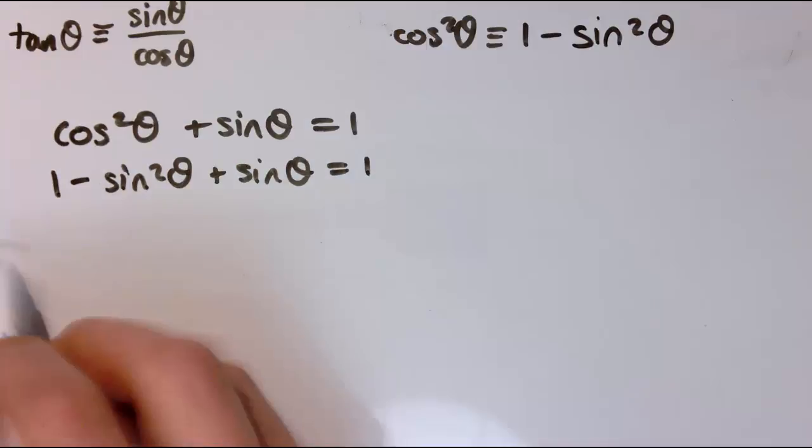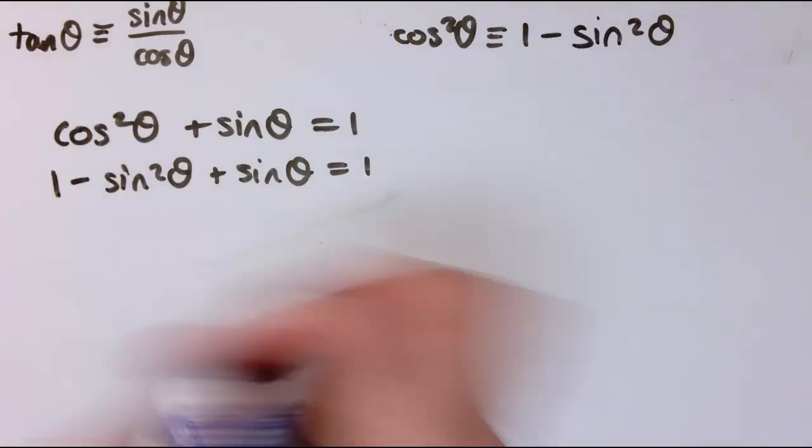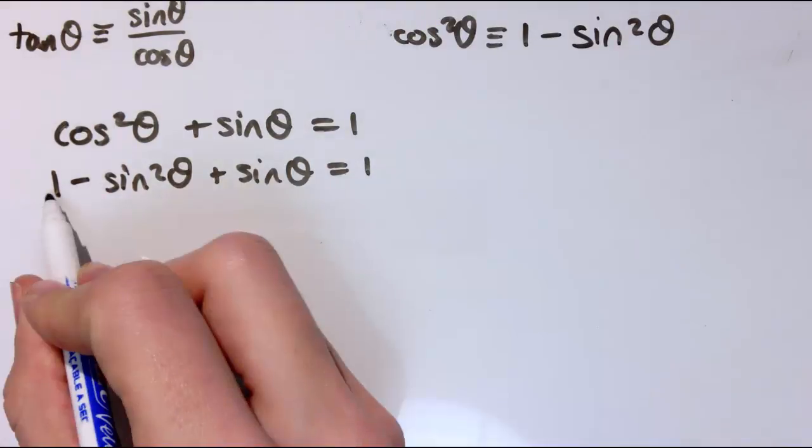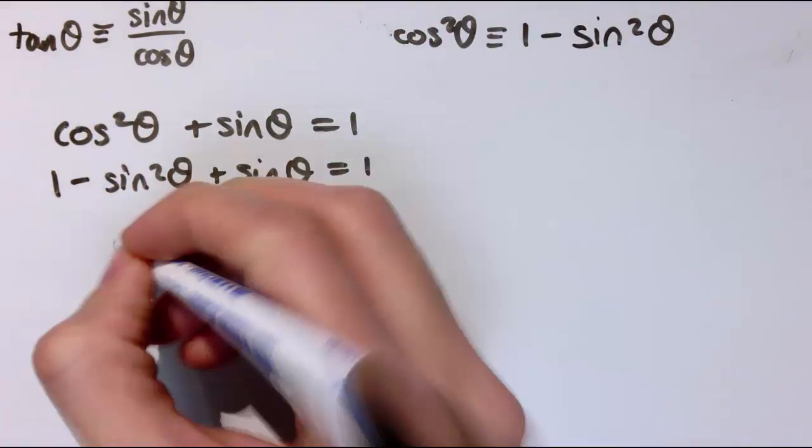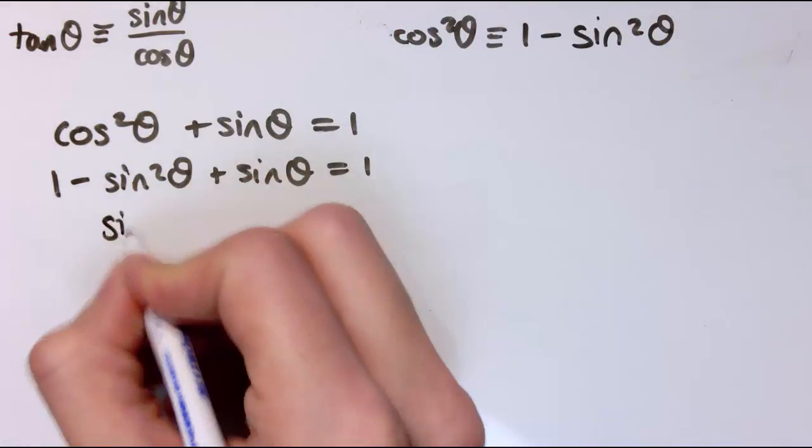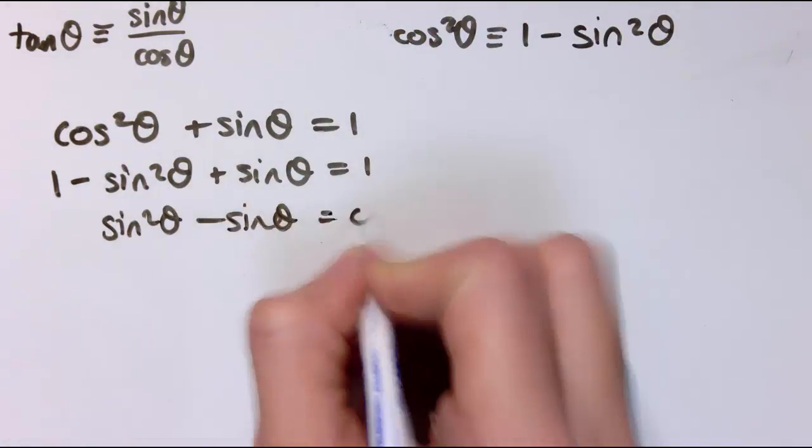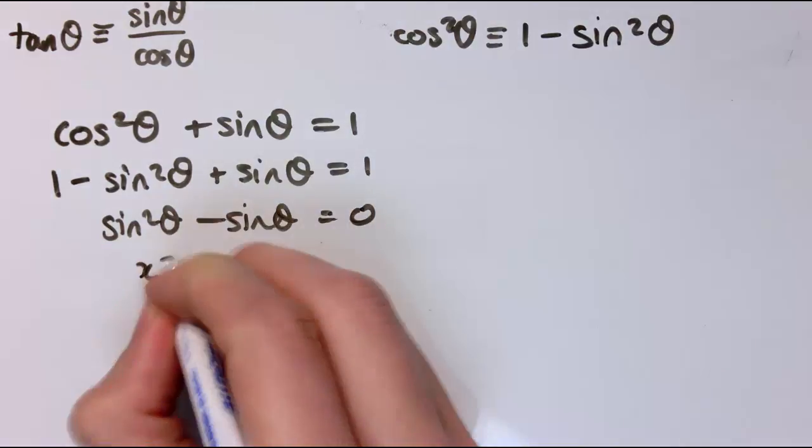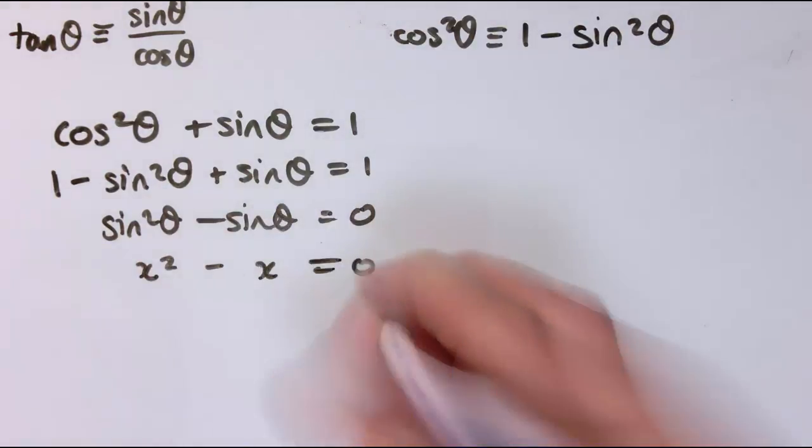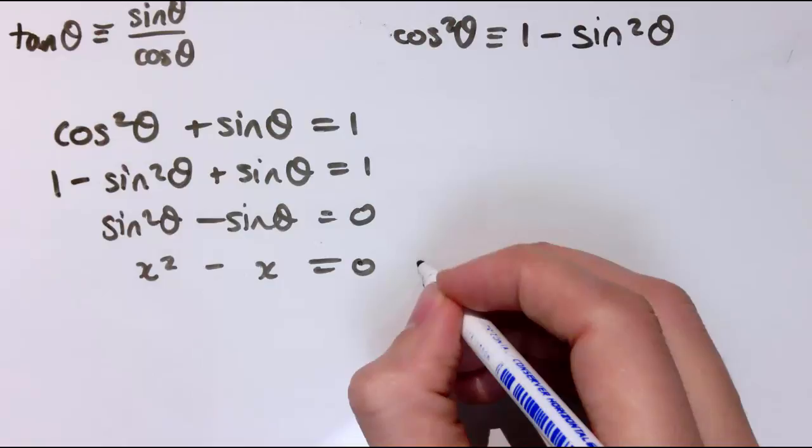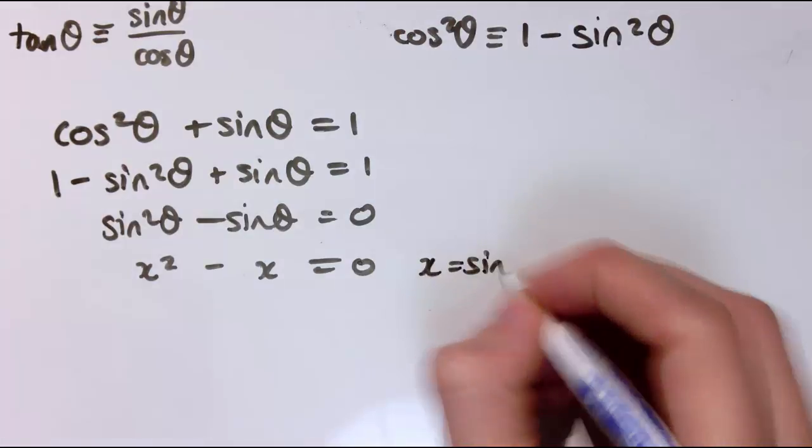And get an equation like this. Now this one's going to work out slightly more easily by the looks of it. So the 1 cancels from each side. And let's write this is sin² θ minus sin θ equals 0. So again, it's like a quadratic equation, x² minus x equals 0, where this time x equals sine of θ.